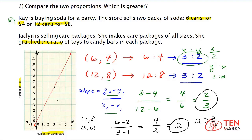So now you know that Jacqueline's proportion is greater. She sells 2, or gives 2 toys for every 1 candy bar in her packages.